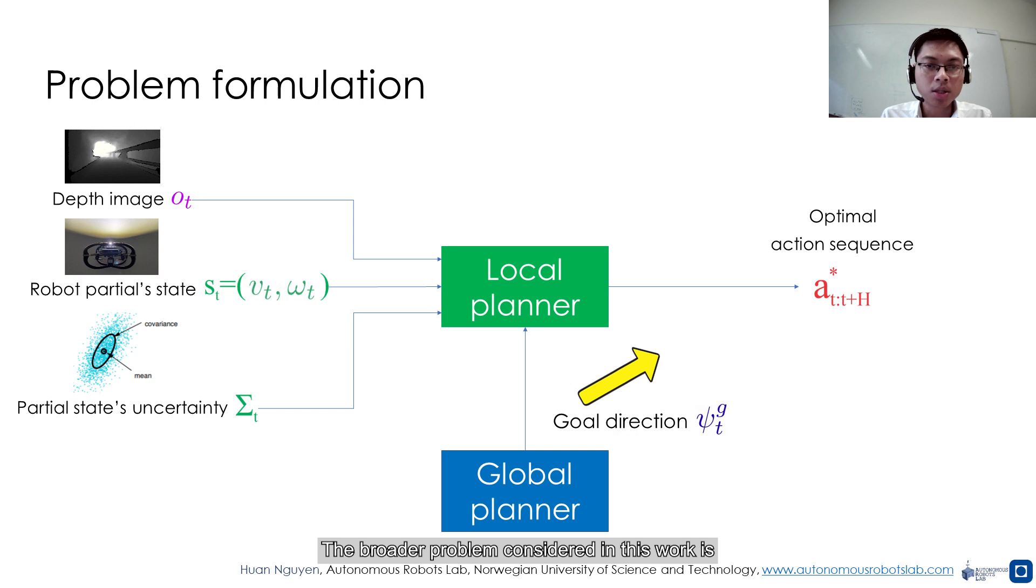The broader problem considered in this work is that of autonomous collision-free navigation, assuming only access to the partial state estimate of the robot, including the linear and angular velocities, the associated covariance, and the real-time depth data. We assume that there's a global planner providing the goal direction to the robot, possibly by having access to a topological map of the environment.